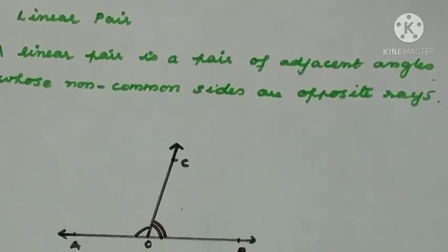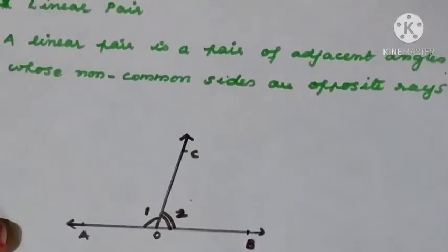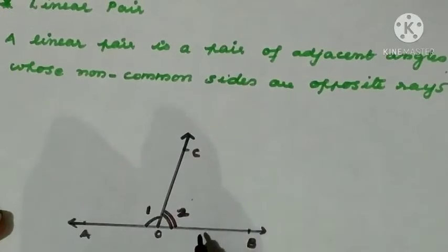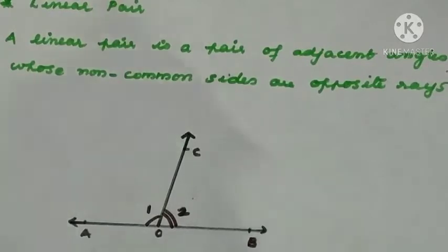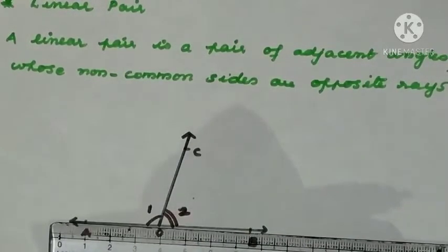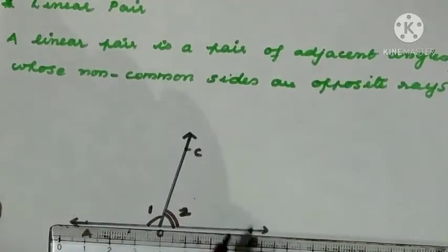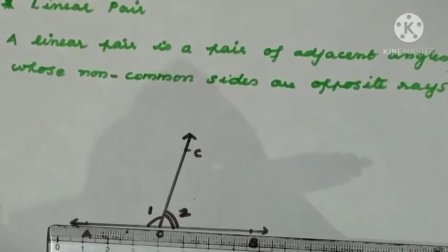For it to be a linear pair, it should be an adjacent angle and the non-common sides must be opposite rays — both conditions must be satisfied. In the diagram, angle 1 and angle 2 are adjacent angles. The reason: they share a common vertex and a common arm, and the non-common arms are on either side of the common arm. The non-common arms OA and OB form a straight line, so angle 1 plus angle 2 equals 180 degrees.